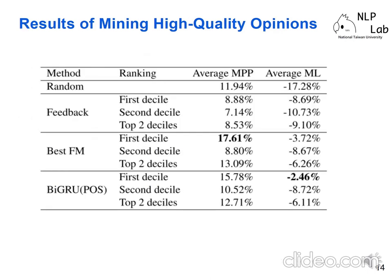Here are the results of this experiment. First, we randomly select some posts from the social media platform and show the MPP and ML of this method. We also compare with a baseline that uses post likes to sort out posts during the data collection period, which achieves about 8% MPP and 9% ML. Our proposed best fusion model (FM) achieves about 30% MPP using only the top 20 opinions sorted by the proposed approach, and the downside risk is also lower than the previous best baseline.